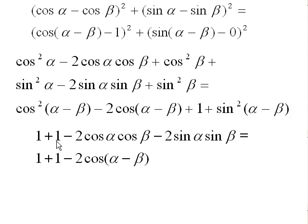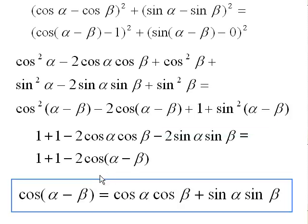So I've got two 1s I can cancel from both sides, and what's left is two terms on the left and one term on the right, each with a coefficient of minus 2. Dividing through by minus 2 to simplify, what we get is: cosine of (alpha minus beta) equals cosine alpha times cosine beta plus sine alpha times sine beta. So we've got a formula for the cosine of the difference of two angles.